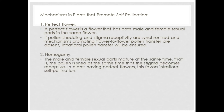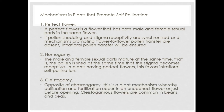Next we have homogamy, where the male and female sexual parts mature at the same time — that is, pollen is shed at the same time the stigma becomes receptive. In plants having perfect flowers, this favors intra-floral self-pollination. Next we have cleistogamy, which is the opposite of chasmogamy. Cleistogamy is a plant mechanism whereby pollination and fertilization occur in an unopened flower or just before opening. Cleistogamous flowers are common in beans and peas.